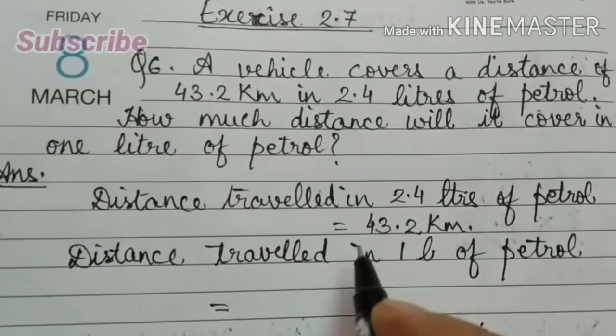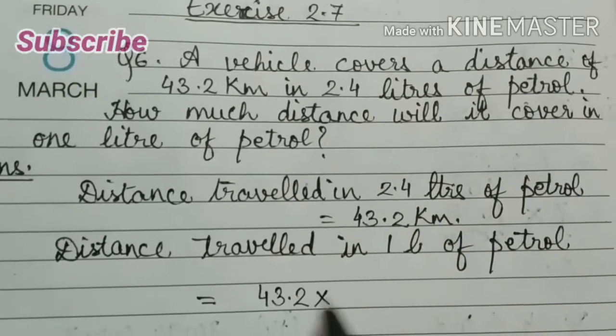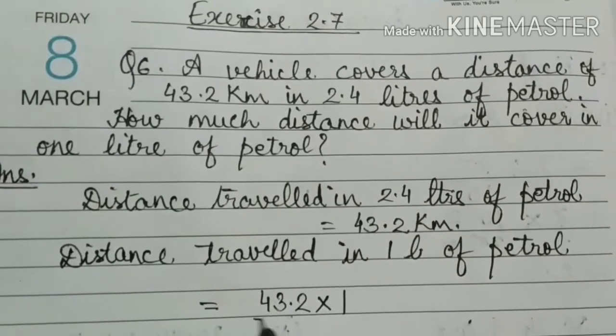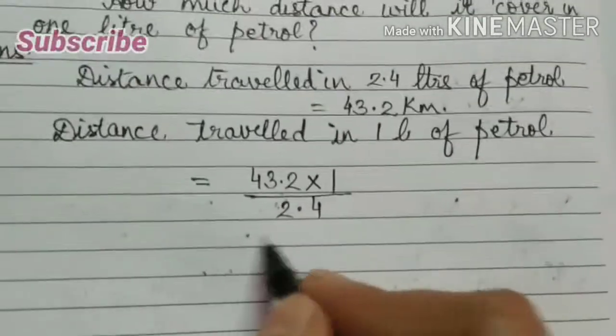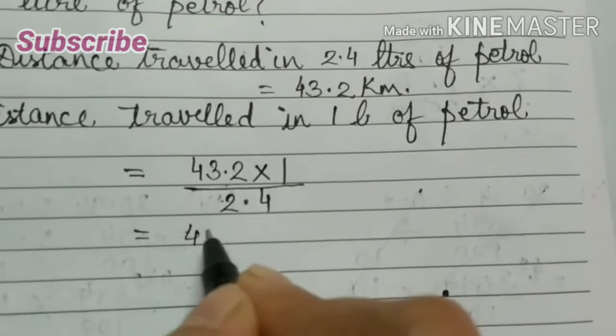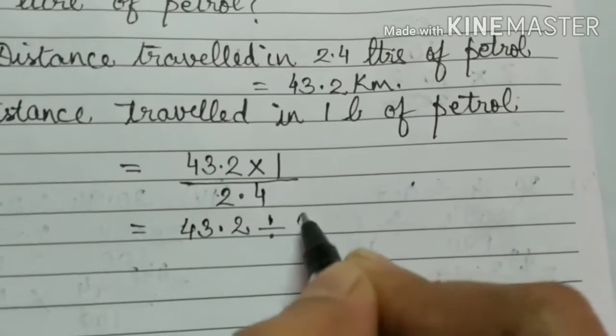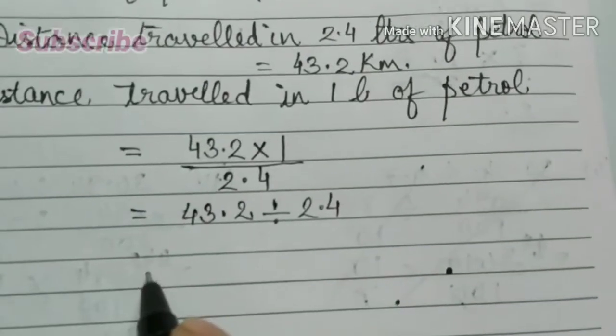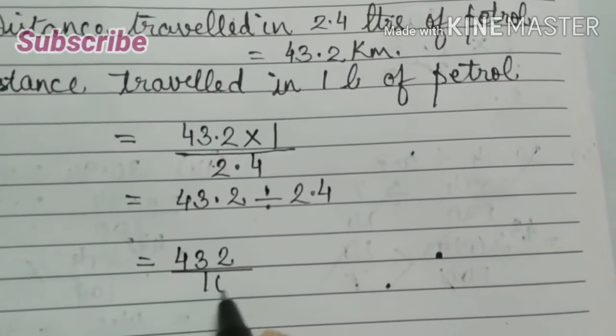Equal to 43.2 times 1 divided by 2.4. That is equal to 43.2 divided by 2.4. So 432 divided by 10.